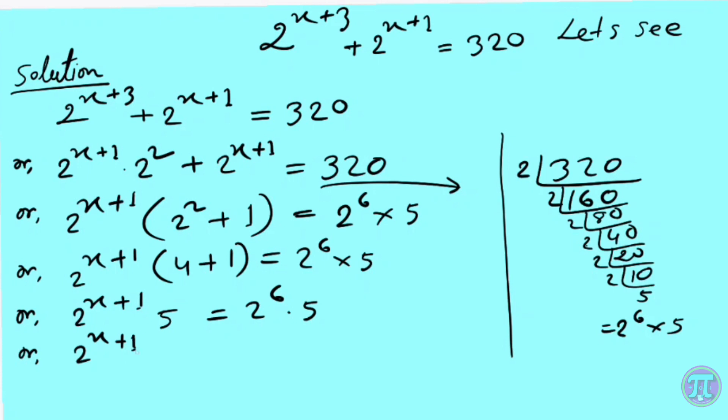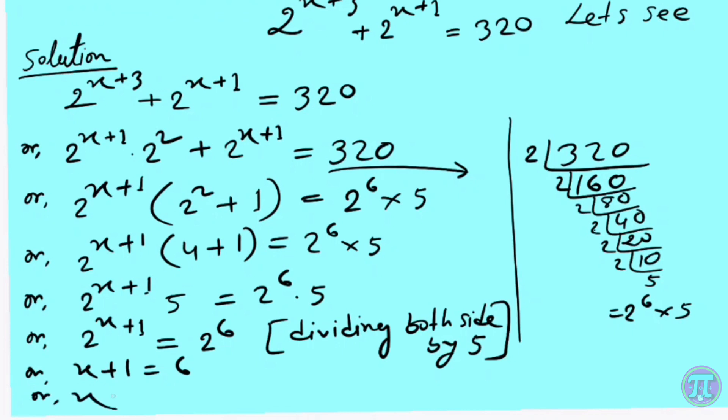Dividing both sides by 5, we get 2^(x+1) = 2^6. Since the bases are the same, the powers must be equal: x + 1 = 6. Therefore, x = 6 - 1 = 5. This is our answer.